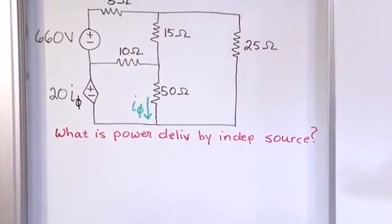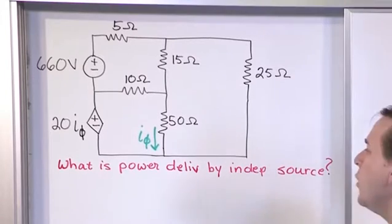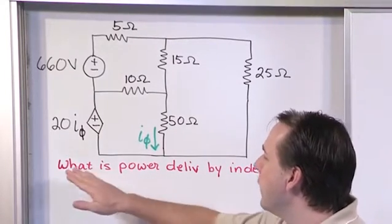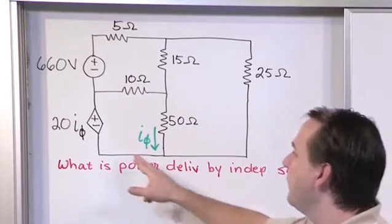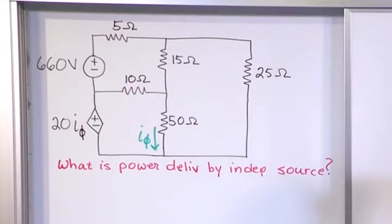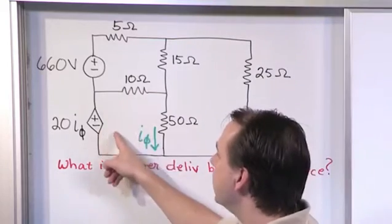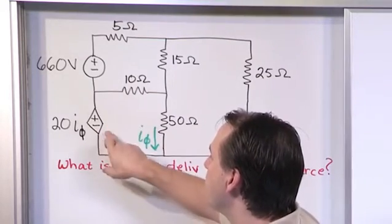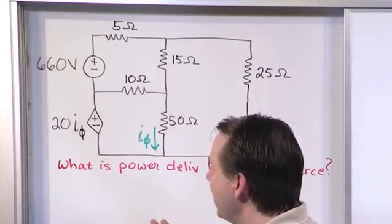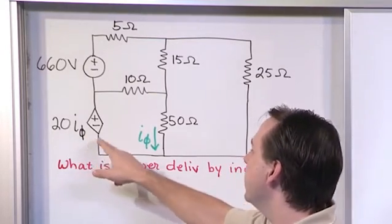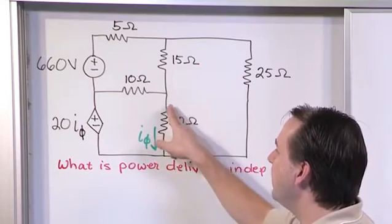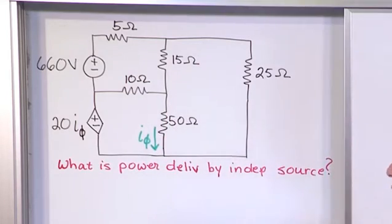In this particular problem, we're asked to find the power delivered by the independent source. We have an independent voltage source. Notice that the voltage appearing on the terminals of this source is dependent on the current - we're labeling it I phi - which is the current flowing through the 50 ohm resistor.